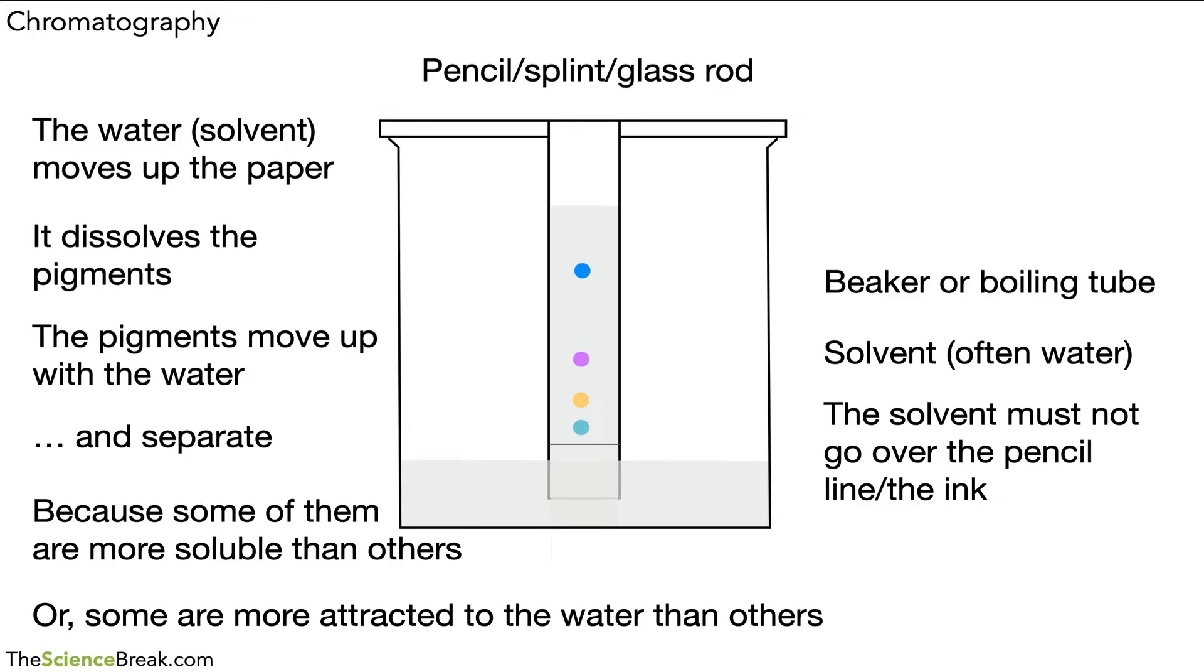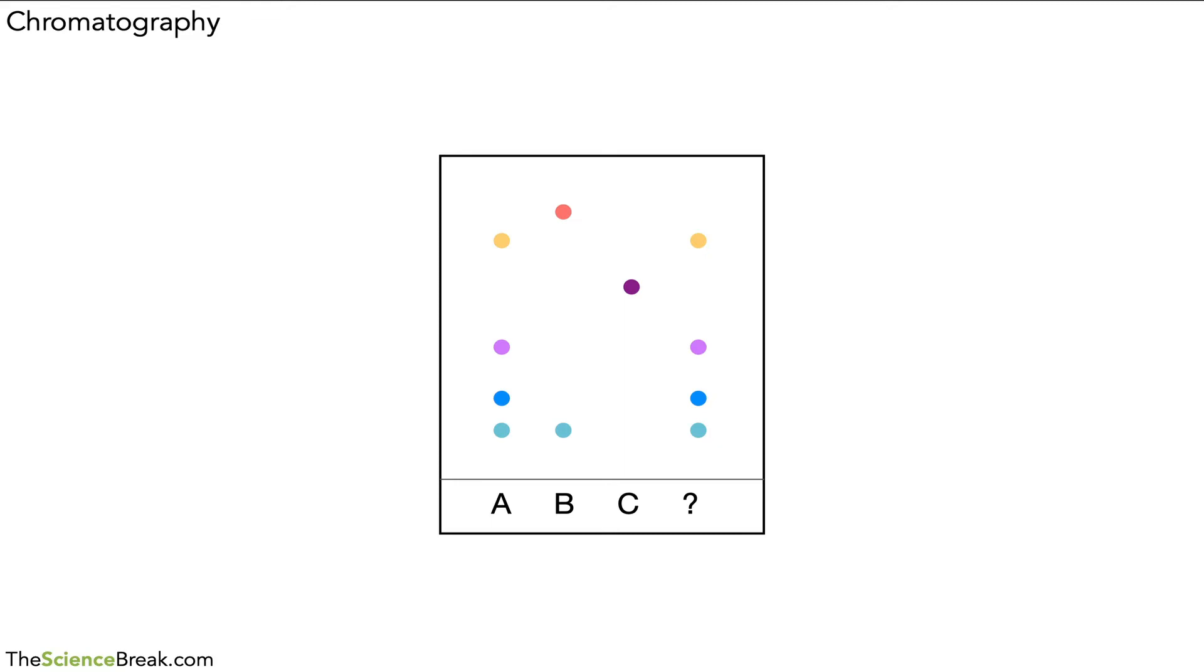That's the method and that's how it works. What we can do now is take a quick look at another experiment. This time we've done it on a wider piece with four different samples: A, B, C, and a question mark. This is called a chromatogram. We've got three known colors and one mystery color.